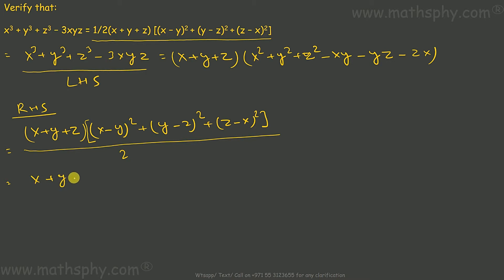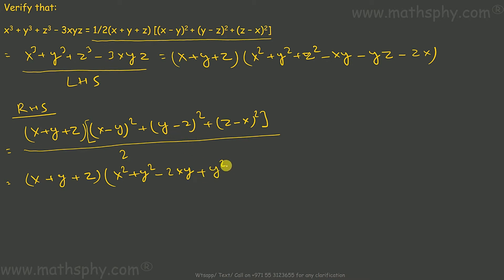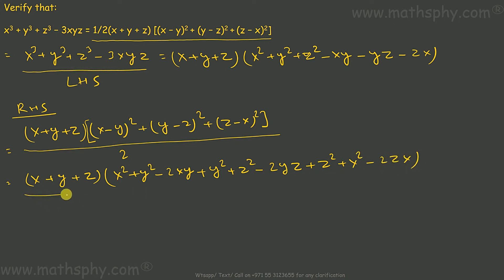This can be written as x plus y plus z, and x minus y whole square expands to x squared plus y squared minus 2xy. y minus z whole square gives y squared plus z squared minus 2yz, and z minus x whole square gives z squared plus x squared minus 2zx. All over 2.